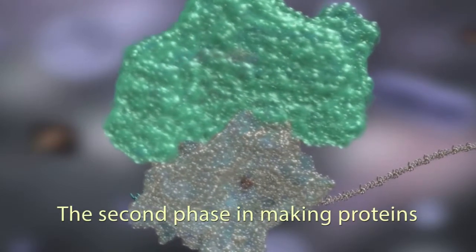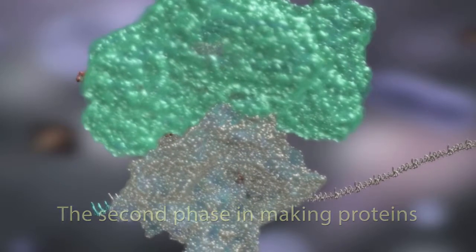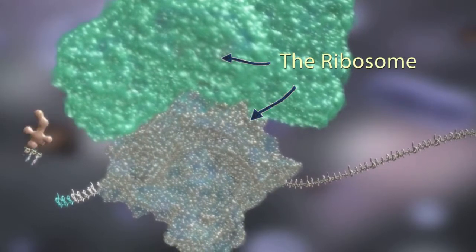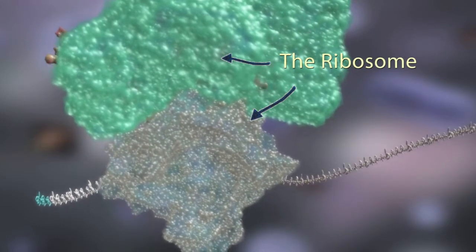A strand of RNA made from the DNA is sent with the help of other proteins to a two-part molecular machine called the ribosome. This is where the translation takes place.